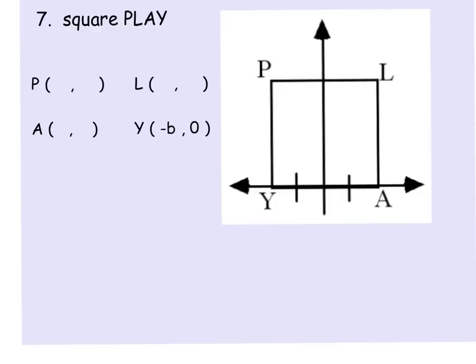In this example, we have square PLAY, P-L-A-Y, and they tell us that Y is a point of (-b,0). Well, what that tells us is that going from (0,0), since we're going to the left, that's what makes it negative, but it tells us that this distance is a distance of b, which means that this distance is b. So if we add those two b's together to get this whole length, that means that the length of each side of the square is going to be equal to 2b. And so we know that from A to L is 2b, and from Y to P is 2b.